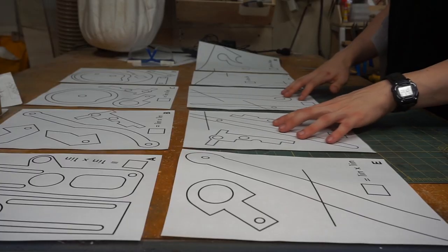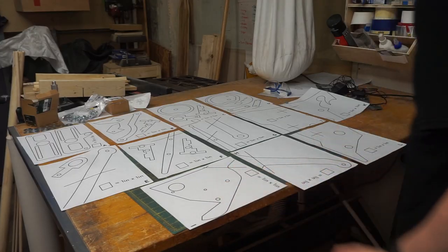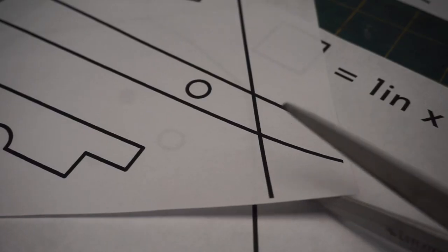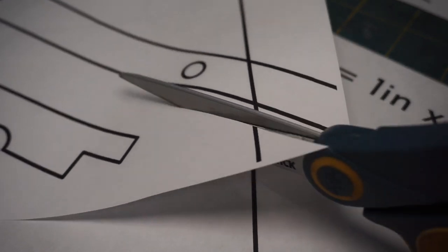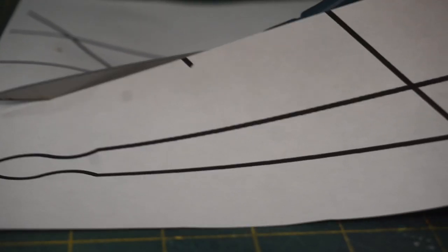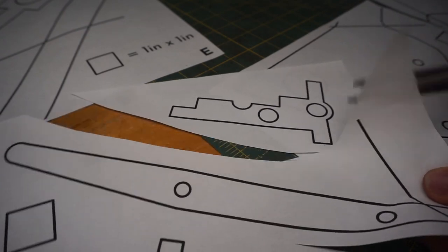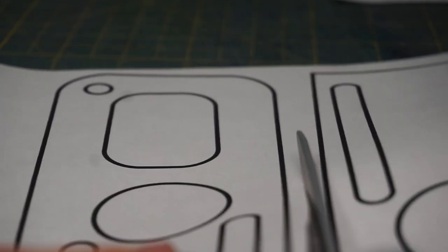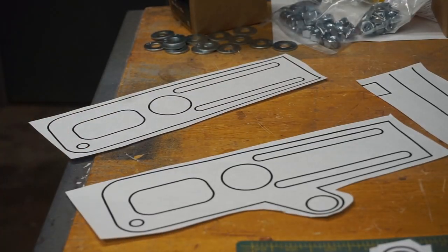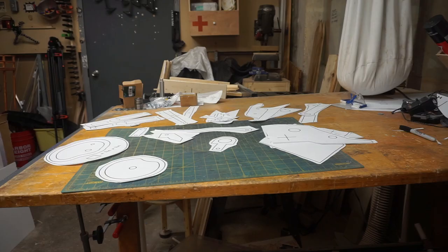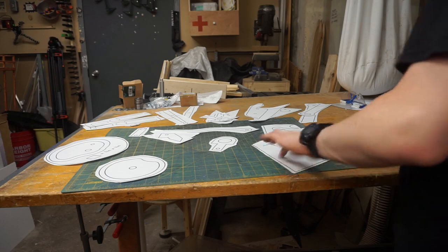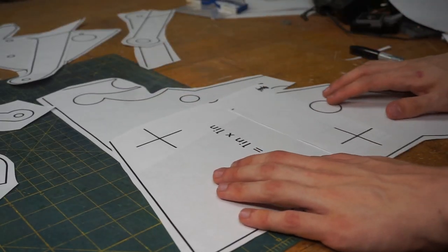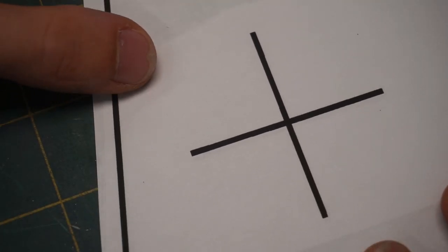Most of the sheets have multiple pieces on them, so I'll cut each out roughly with scissors. A few of the parts were too big to fit onto a single sheet, so I'll have to tape a few sheets together. Anticipating this, I gave myself some marks that I can use for alignment.